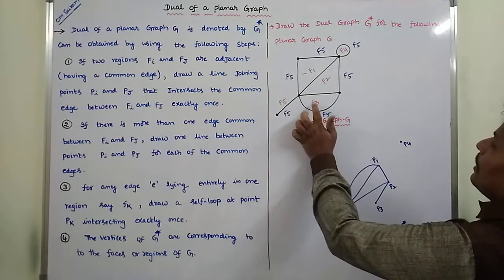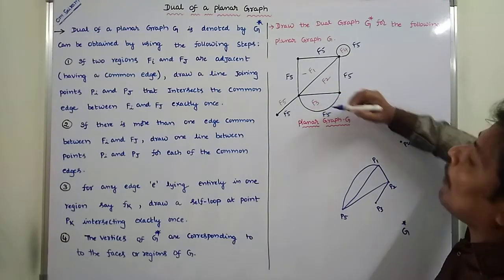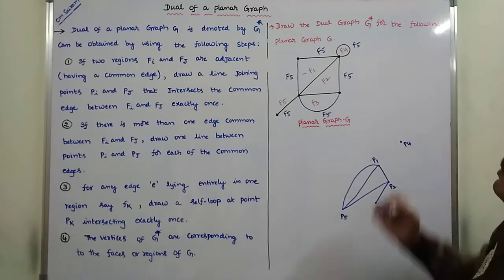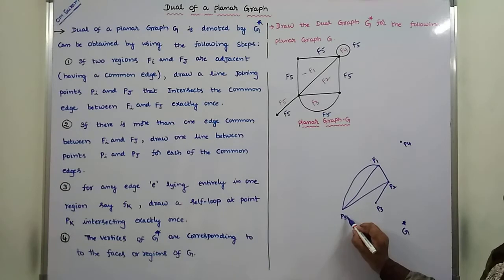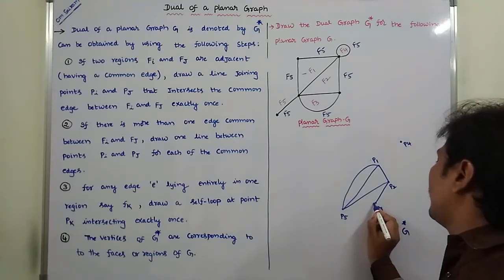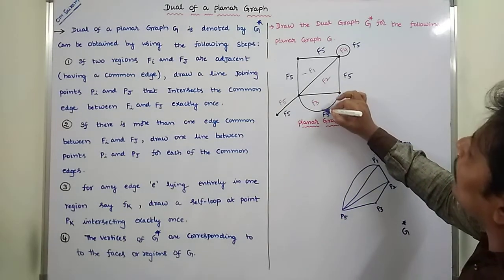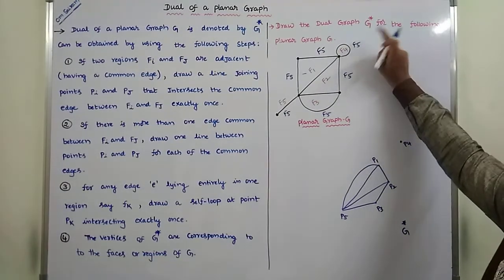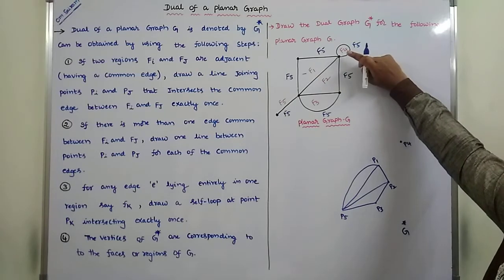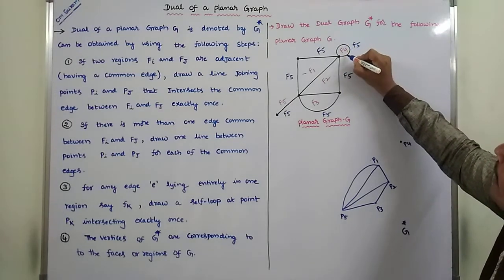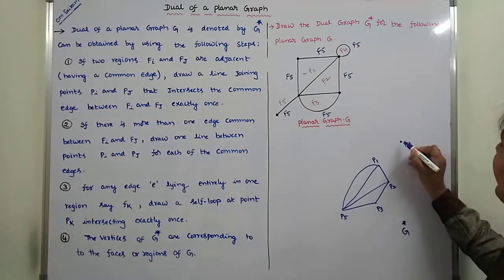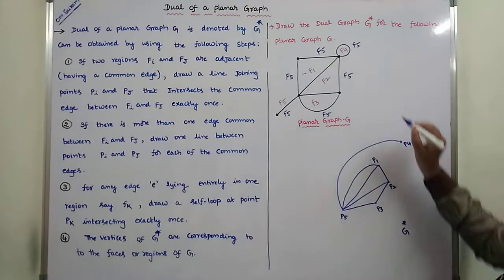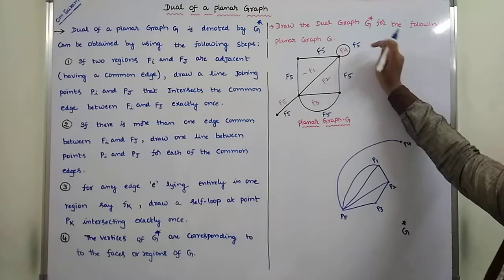F4 and F5 are adjacent regions; they are separated by a common edge. F4's corresponding point is P4 and F5's corresponding point is P5. We have to draw the line between P4 and P5 that intersects the common edge between F4 and F5.